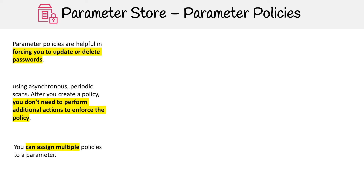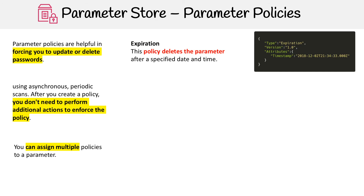Let's look at what policies we have available to us — there are only three at this moment. The first one is Expiration. The idea with this policy is you say you want this parameter to expire after a specific date and time, and then it will just auto-delete.